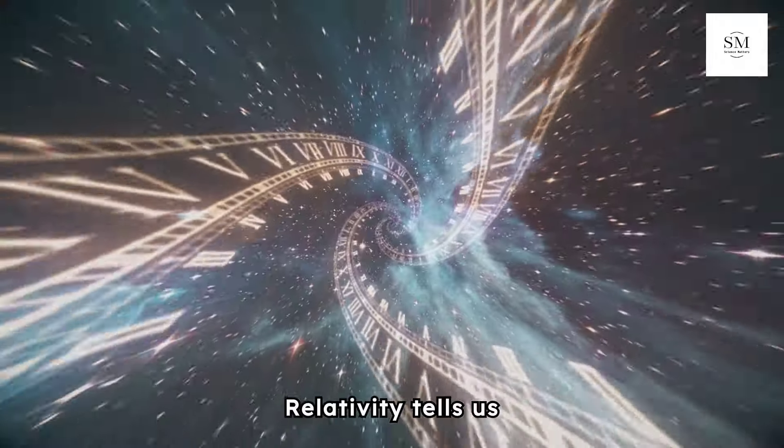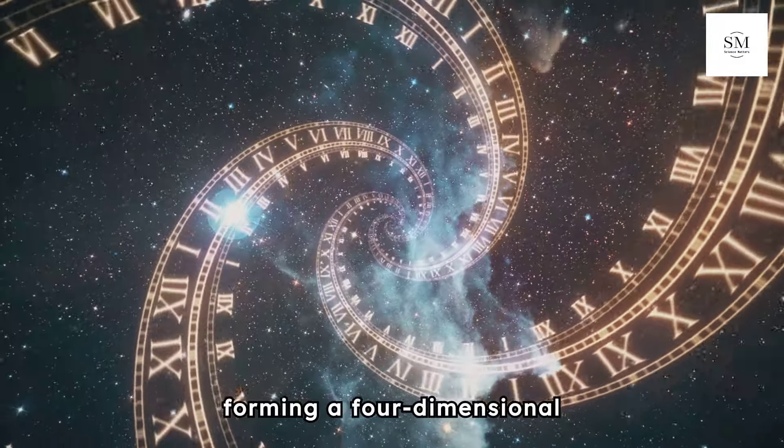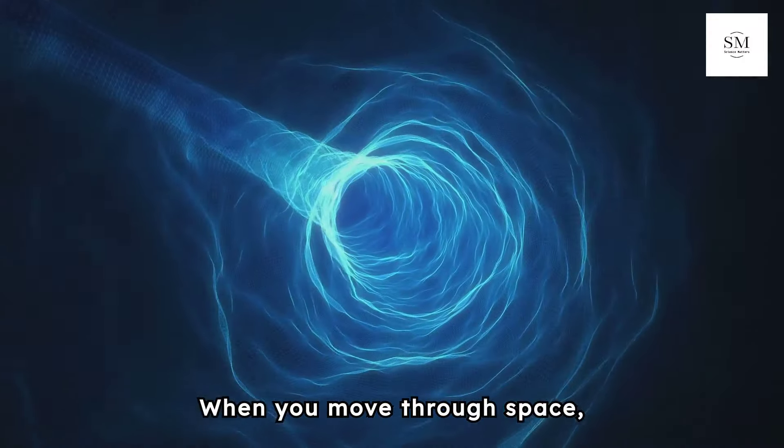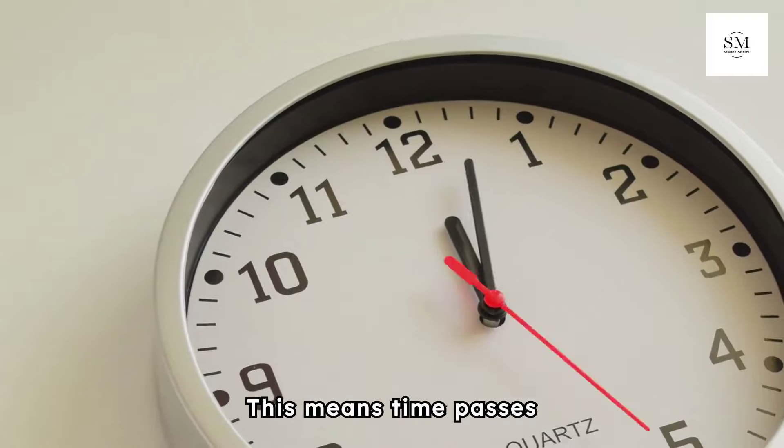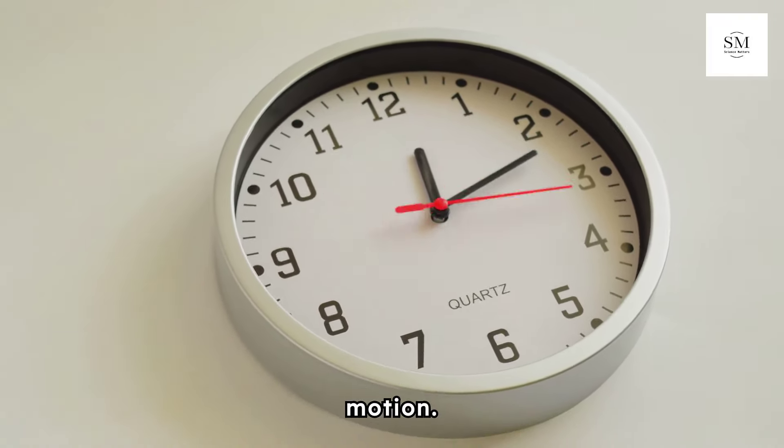Relativity tells us that space and time are interconnected, forming a four-dimensional fabric called space-time. When you move through space, you also move through this block of time. This means time passes differently for different people depending on their relative motion. So what you consider now is just one slice of this block, varying based on your speed and direction.